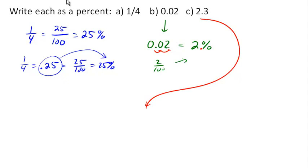Okay, one more here, 2.3. So 2.3, again, moving the decimal place two to the right, would give us, well, let's see here, two to the right would give us 230 percent.